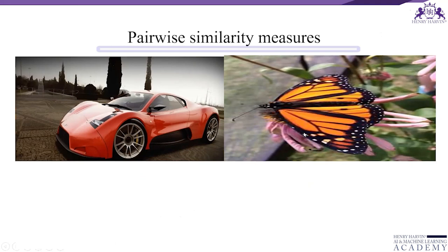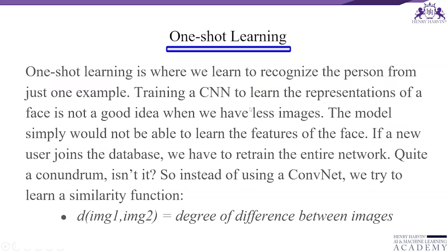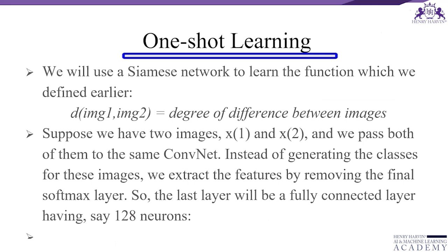Now let us understand what one-shot prediction is. One-shot learning is where we learn to recognize a person from just one example. Training a CNN to learn face representation is not a good idea when we have very few images — the model simply would not be able to learn the features of the face. Also, if a new user joins the database we would have to retrain the entire network, which is really difficult. So instead, we find the degree of difference between images using a Siamese network.